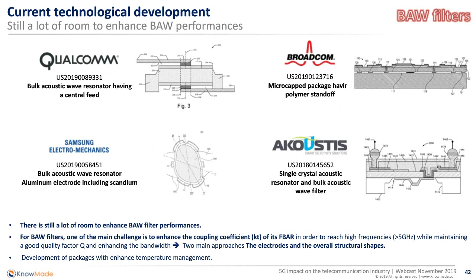When looking at the technology described in these BAW patents, we see a very big difference from SAW: almost all these players are not yet looking at modules but are really developing the manufacturing steps and design of their bulk acoustic wave filters. Their main goal is to increase the resonant frequency to reach high frequencies and address 5G applications. There are two main approaches: working on the electrode — trying new materials, alloys, shapes — and working on the overall filter shape.